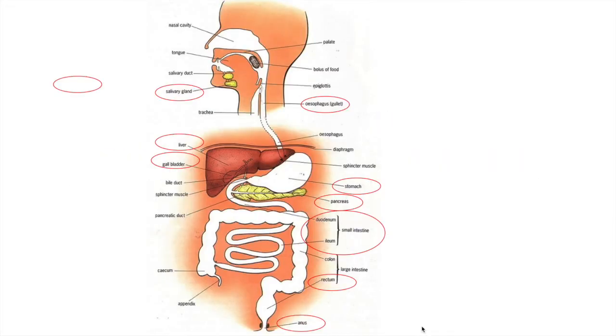This is the basic anatomy of the human digestive system. You don't need to know everything, but you know the location of these names and what they do for you in the process of digestion.